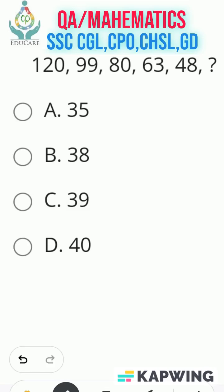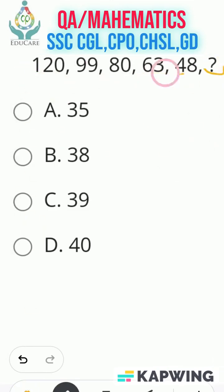This is a basic number series question in which we have the following numbers and we need to find the unknown term using the given numbers and the relation between them. For that, we need to find the first relation between them. See 120 and 99 — our first approach should be to find the difference: 99 and 120, the difference is 21.